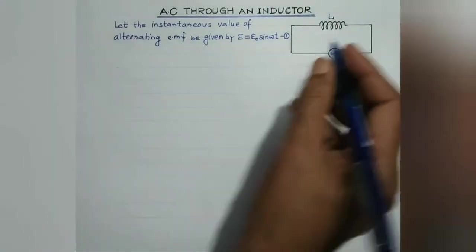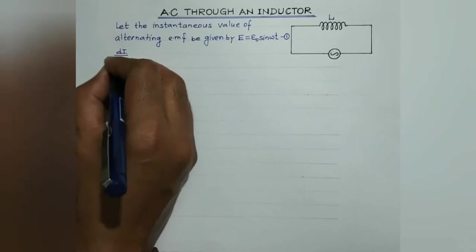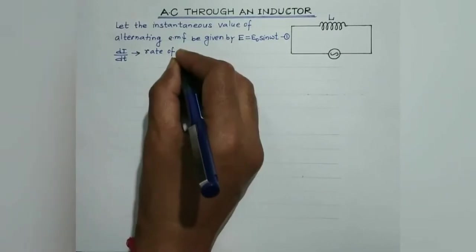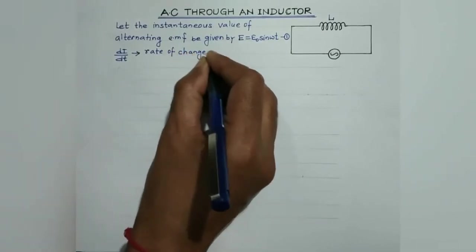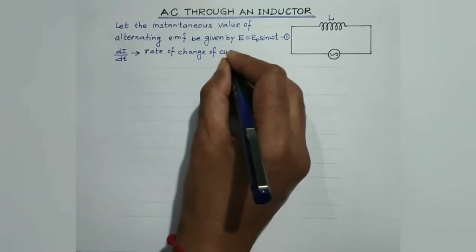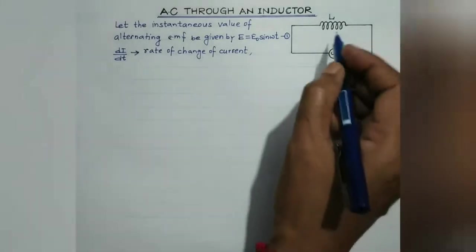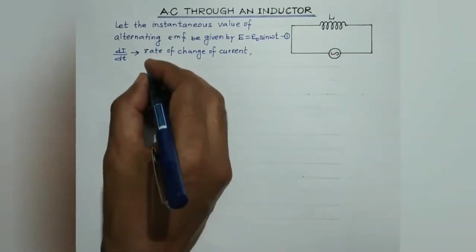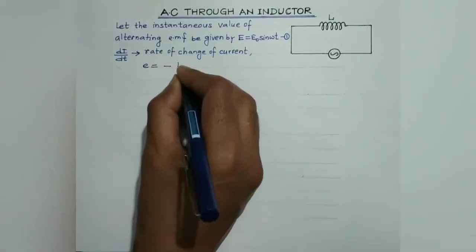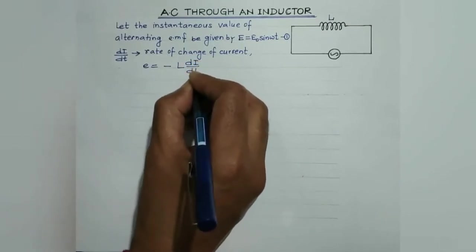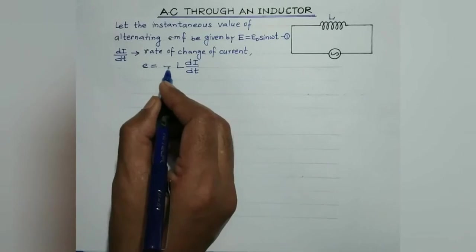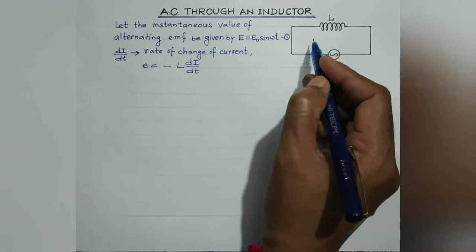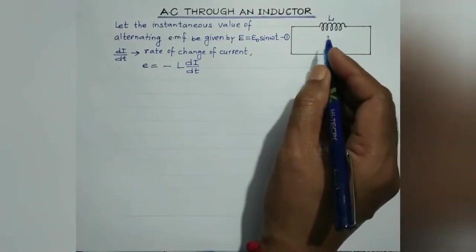Now if i is the current through the circuit, then dI/dt represents the rate of change of current in the given circuit. The induced EMF produced across the inductor due to electromagnetic induction is given by minus L dI/dt. The negative sign signifies that the induced EMF is always of opposing nature.